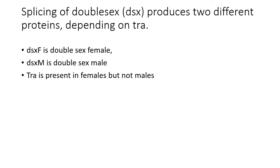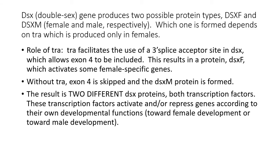DSXF is doublesex female, and DSXM is doublesex male. Remember, transformer is present in females but not males, and that's how we can produce the doublesex female form of this transcription factor. Transformer facilitates the use of a three prime splice acceptor in doublesex, allowing exon 4 to be included. Both doublesex male and doublesex female are active in terms of guiding further sexual development in these flies.